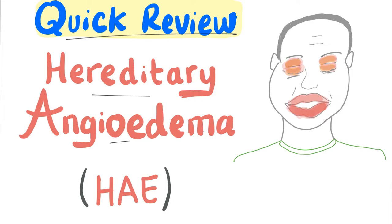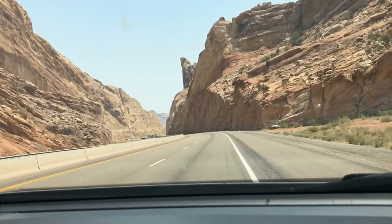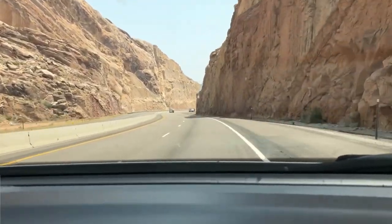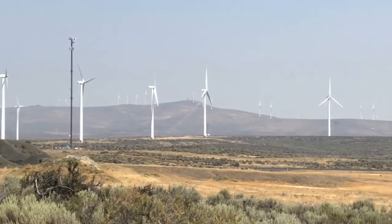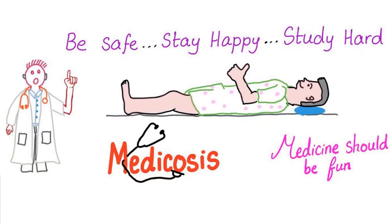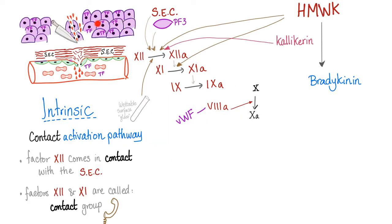The playlist is called Bleeding and Coagulation. With that being said, let's get started. First, you know the intrinsic coagulation pathway. Here we have high molecular weight kininogen. By kallikrein, it's converted into bradykinin. High molecular weight kininogen activates factor 12 and factor 11 of the intrinsic pathway.